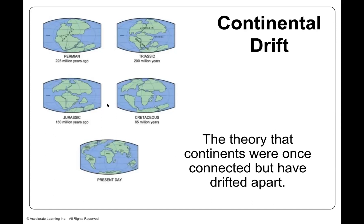The theory that the continents were once connected but drifted apart is called continental drift. During the Permian period, all land masses were joined together in a supercontinent called Pangaea. It's hard to imagine that millions of years ago all land masses were connected. As time passed, they began to pull apart during the Triassic period, then the Jurassic period — the age of the dinosaurs — and then into the Cretaceous period, 65 million years ago.